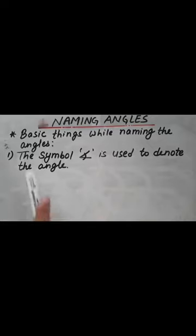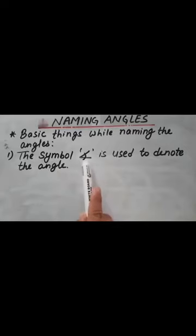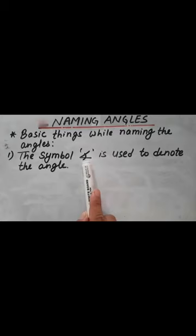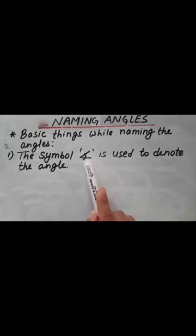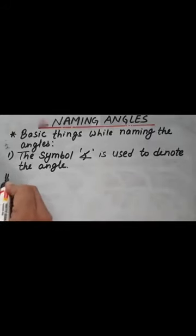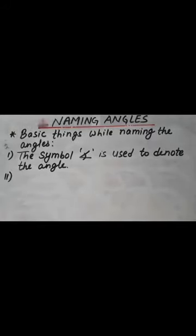While naming the angle, always you should use the symbol of angle. This is the symbol of an angle. While naming the angle, always you should use this symbol. That is point number one. Point number two is: capital letters are used to name the angles.